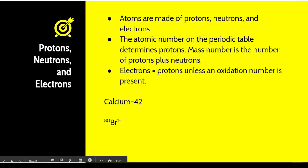For example, we have calcium-42. Remember that the mass number can be written with a hyphen out to the side, or as a subscript before the chemical symbol. Calcium on the periodic table is 20, therefore the number of protons is 20. There is no charge, so the number of electrons is also 20. With a mass number of 42 and the number of protons being 20, we have 22 neutrons.